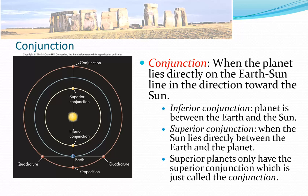Then we have conjunction — when a planet is on the same line as the sun. Opposition is on the same line but on the opposite side; conjunction is on the same side. With the sun in the middle, that's called a superior conjunction. An inferior conjunction is when the planet is between you and the sun. Only inferior planets can have an inferior conjunction; a superior planet cannot. When a superior planet has a conjunction, you just call it a conjunction — no need to say 'superior.'